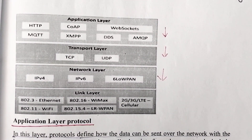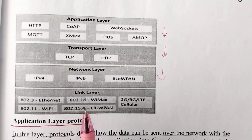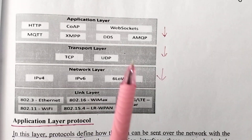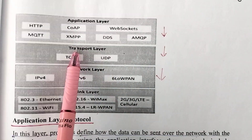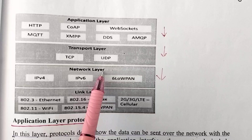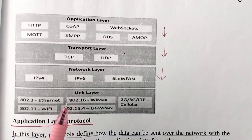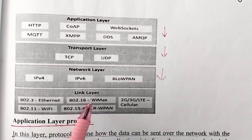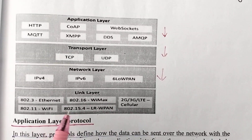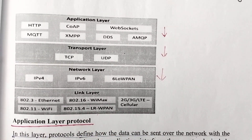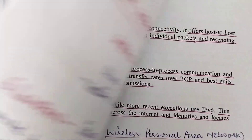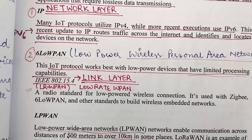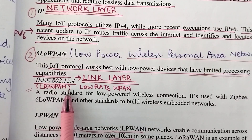Hi everyone. In today's video we are going to study the protocols of the link layer. We have already studied the protocols of the application layer, transport layer, and all the protocols of the network layer. In today's video we will study all the protocols of the link layer which are Ethernet, WiMAX, Cellular, Wi-Fi, and LRWPAN. Let us start with the very first protocol of the link layer, that is LRWPAN.